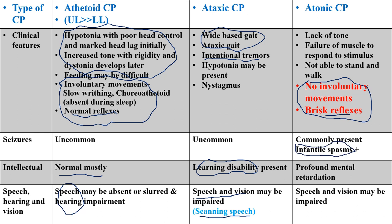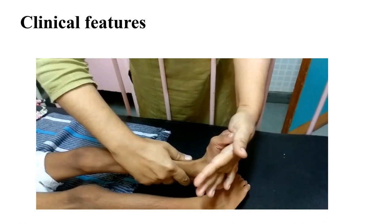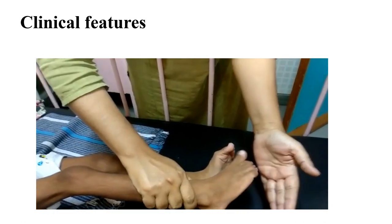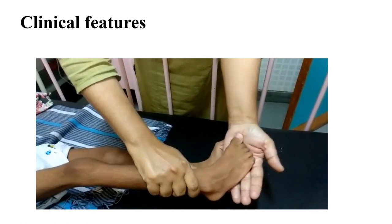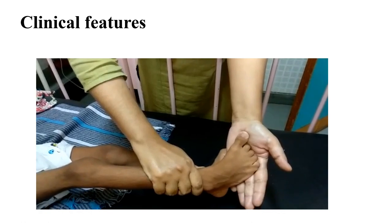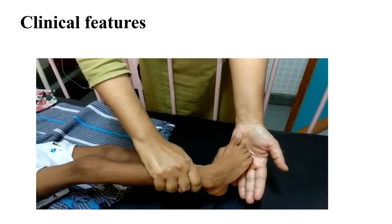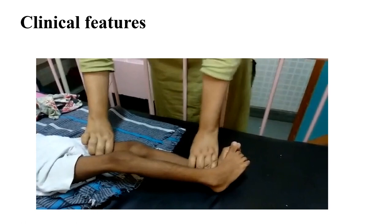In atonic CP, patients may develop myoclonic seizures and profound mental retardation, and both speech and vision are impaired. A video shows a child with bilateral ankle clonus after dorsiflexion of the ankle. If more than five jerks are present, we label it as ankle clonus. In a normal patient, after dorsiflexion, fewer than five jerks occur. More than five jerks indicates ankle clonus, seen here in a child with quadriplegic CP.